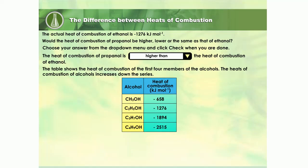The table shows the heat of combustion of the first four members of the alcohols. The heat of combustion of alcohols increases down the series. Why is that so? Let us explore. What else increases as we go down the series?